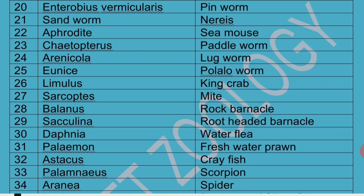Limulus is an arthropod and is considered one of the living fossils, along with Peripatus. Limulus is referred to as King Crab — King Crab is its common name.